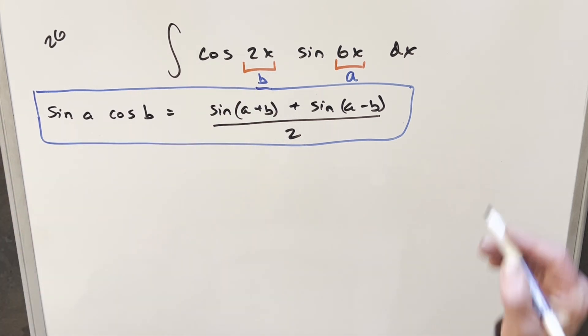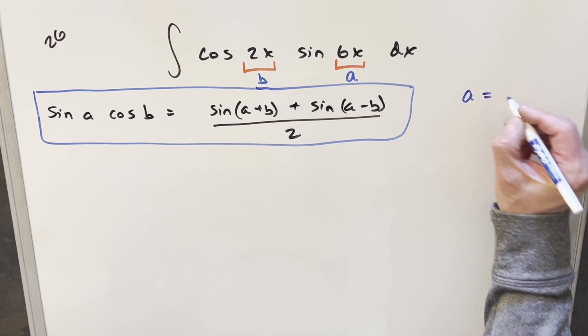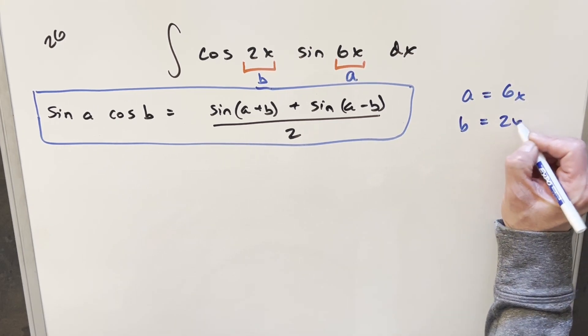Okay, so now we've derived our formula, and we have our value for sine a cos b, which is our integral, we just need to rewrite our integral in this form. And let's just note that our a value is 6x and our b value is going to be 2x.